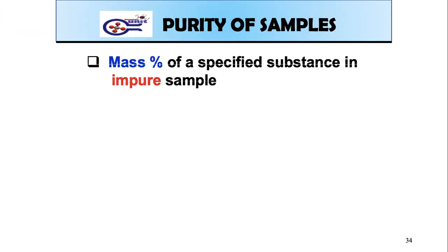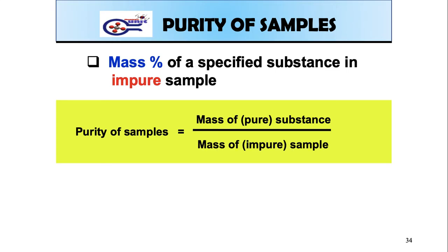Purity. It's the mass percent of a specified substance in impure sample. The formula for purity of sample is mass of pure substance over mass of impure sample times by 100. For example,